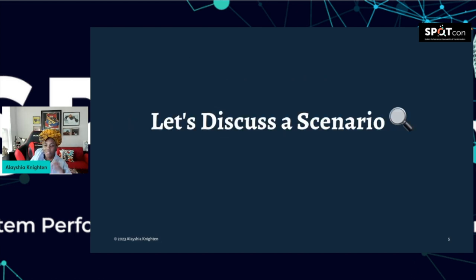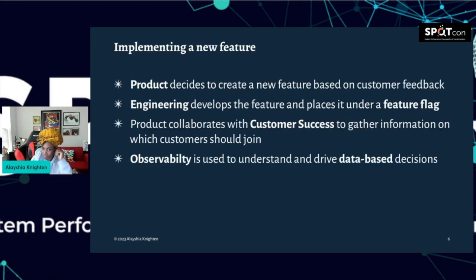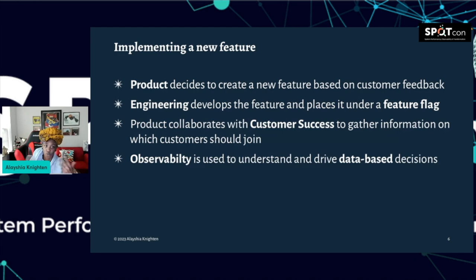Let me walk through an example of something I've seen before: implementing a new feature. Product decides to create a new feature based on customer feedback — that's nothing new. Engineering develops the feature and places it under a feature flag. At that point, product can collaborate with customer success, sales, or whoever to gather information on which customers should join. Observability is used to understand and drive those data-driven decisions.